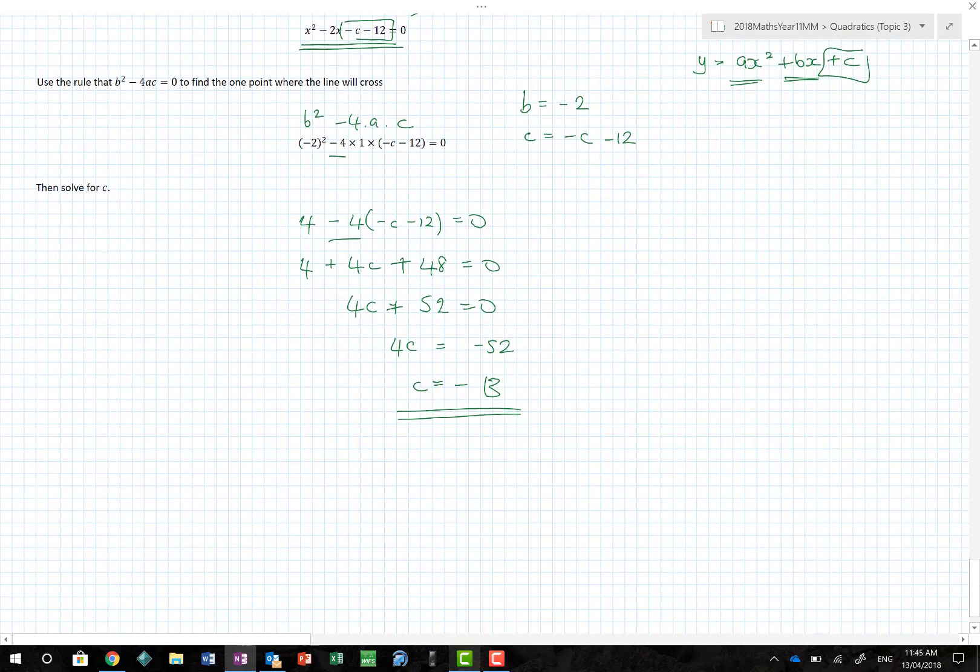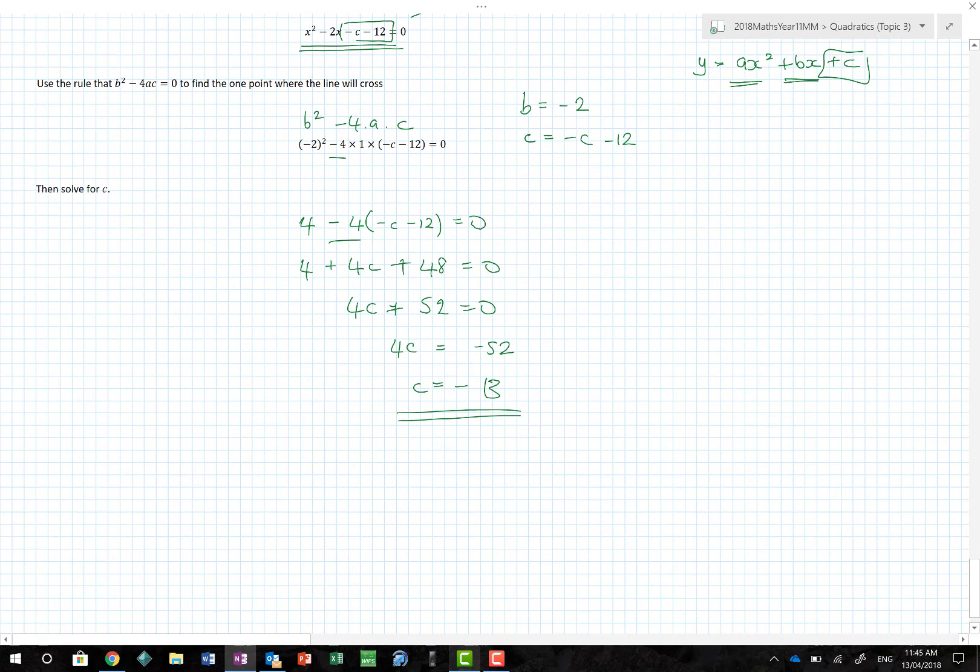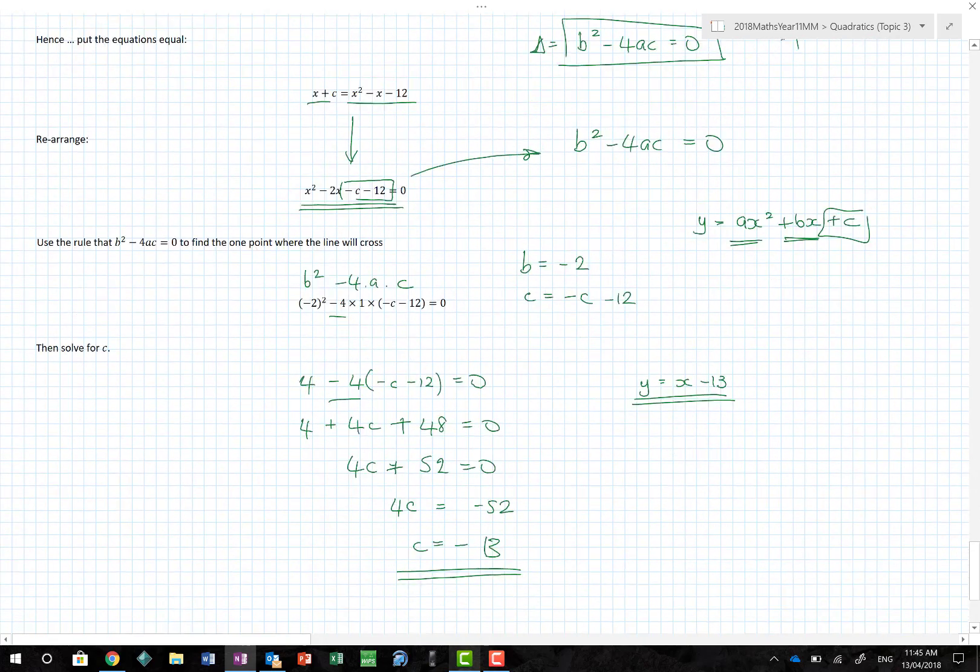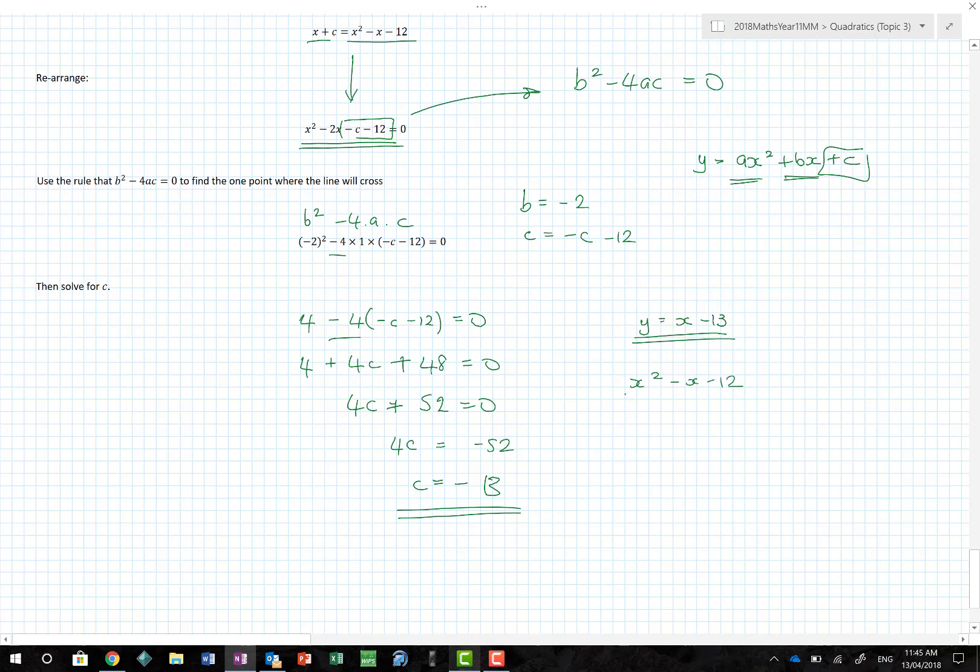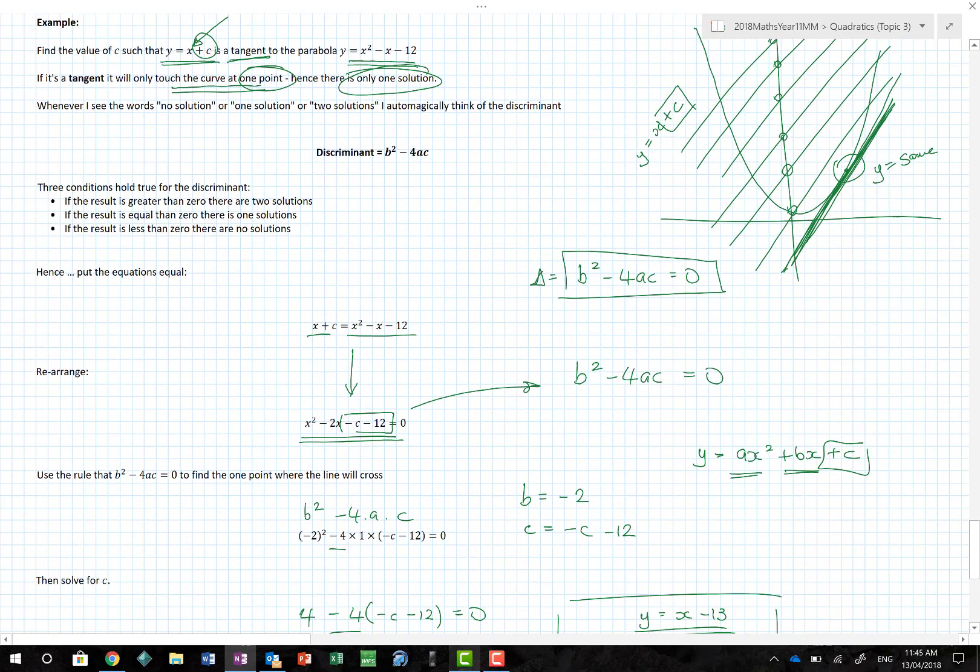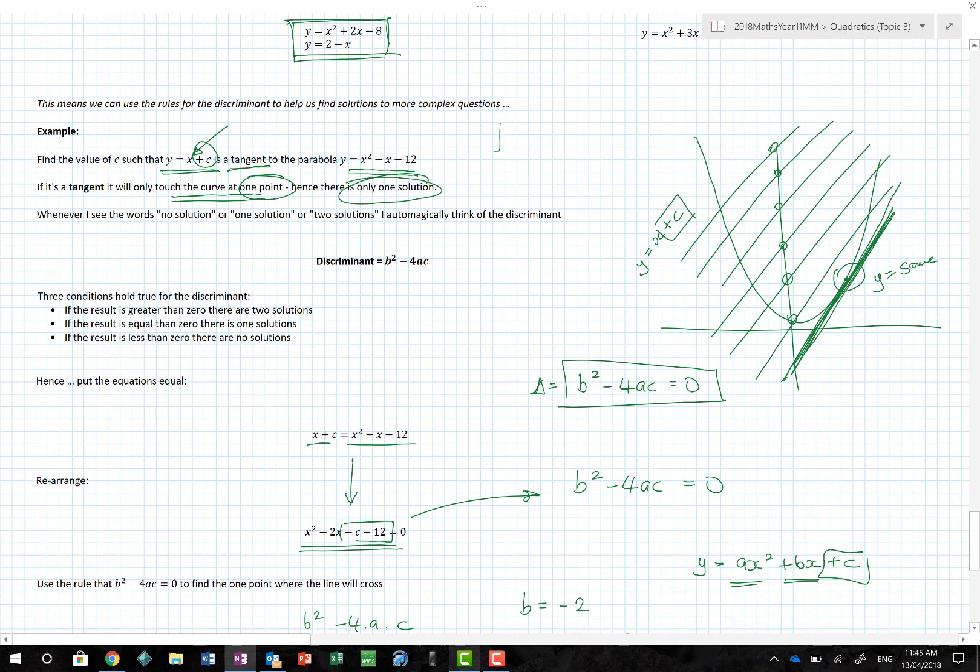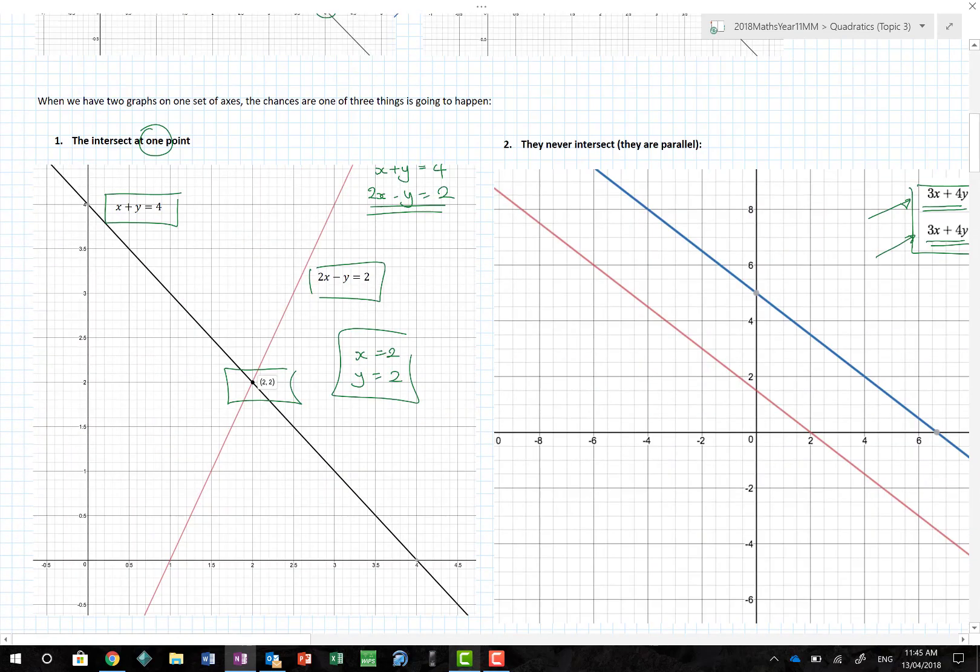I've now found my c value to be minus 13. What does that help me with? I can now say specifically that the line y equals x minus 13 will intersect that graph of x squared minus x minus 12 at just one point, hence being a tangent. Thanks very much for listening. Simultaneous linear equations and quadratic equations, good luck if you're doing the exercises. Hopefully it's made sense.